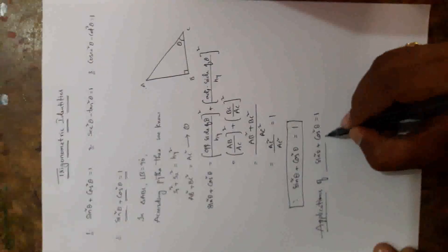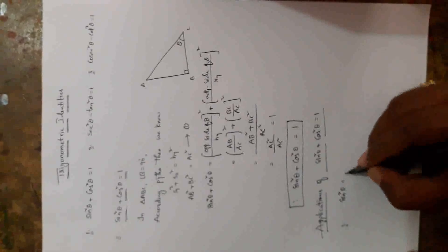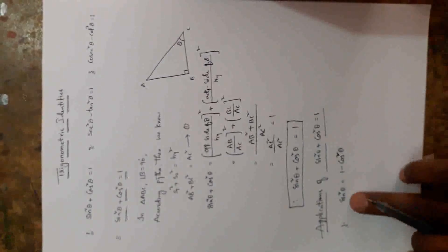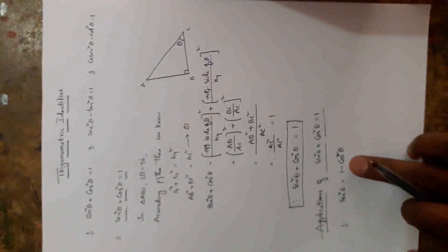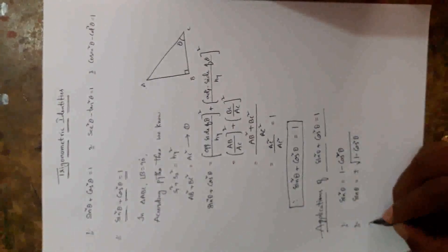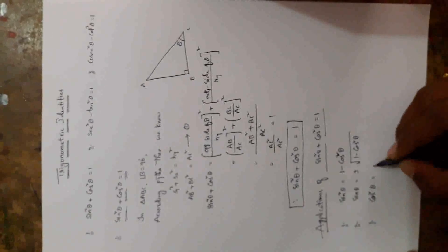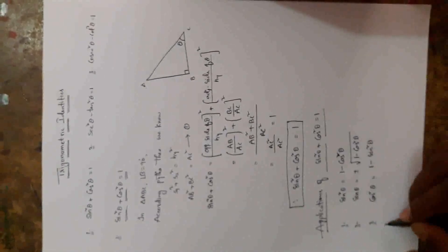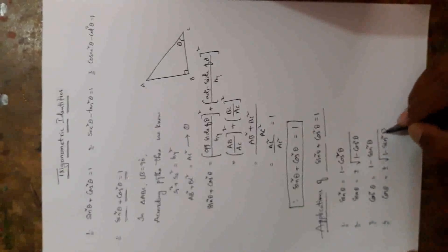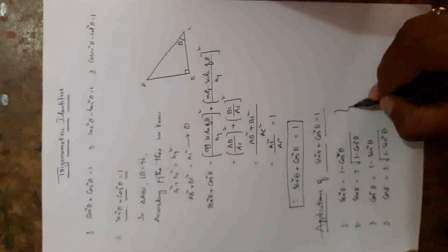Applications of the first trigonometric identity: sin squared theta plus cos squared theta is equal to 1. From this, sin squared theta can be written as 1 minus cos squared theta — so wherever you see 1 minus cos squared theta, you can write sin squared theta, and vice versa. Also, sin theta is equal to plus or minus the square root of 1 minus cos squared theta. Similarly, cos squared theta is equal to 1 minus sin squared theta, and cos theta is equal to plus or minus the square root of 1 minus sin squared theta. These are the four important auxiliary forms from the first trigonometric identity.